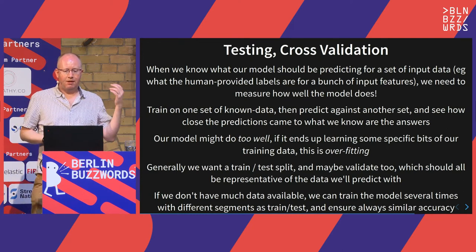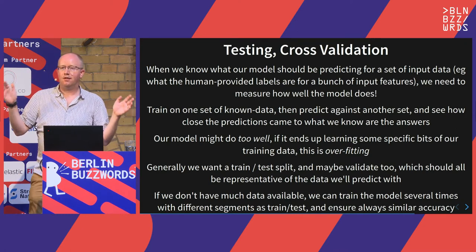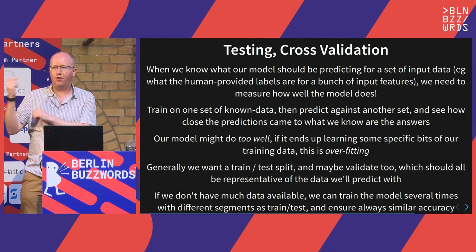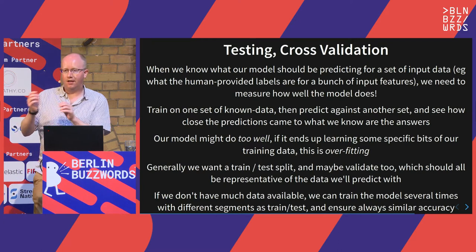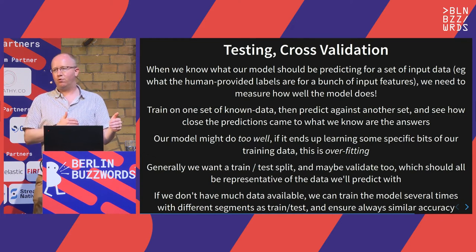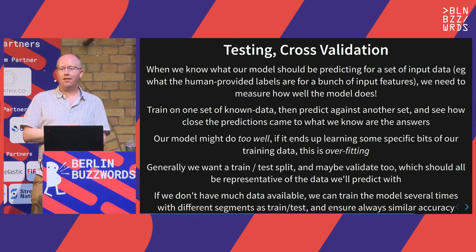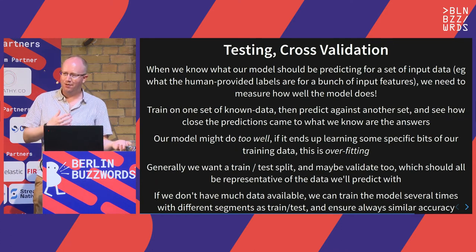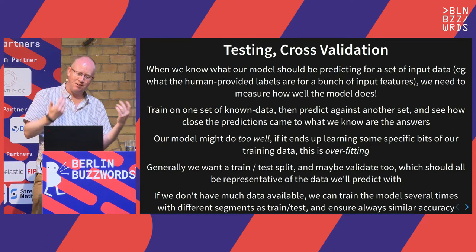Some other things to think about: testing and cross-validation. If you've got data you're going to use for training, don't use all of it for training — hold some back so you can check your thing is working properly. Otherwise you can end up overfitting on your training data, and then you end up with the cancer detection bot that learns that if an image comes from a hospital with 'cancer' or 'oncology' in the name, it's probably cancer. Keep some data back and check that your system is still working on known good data.